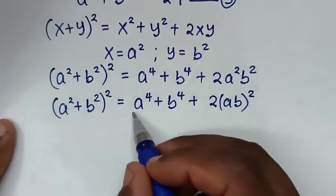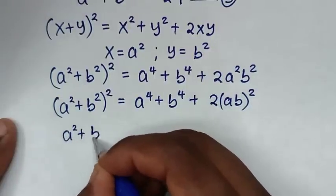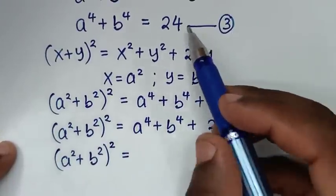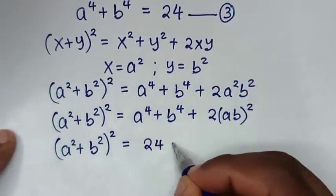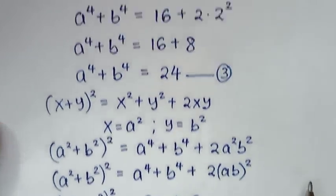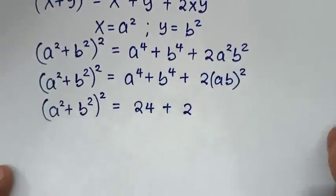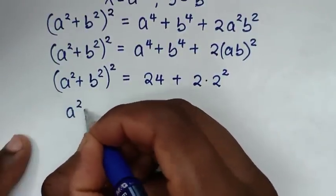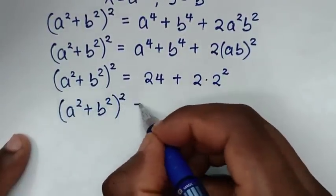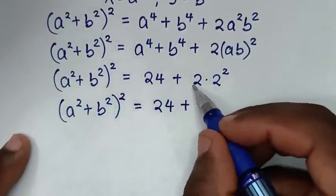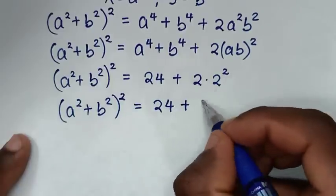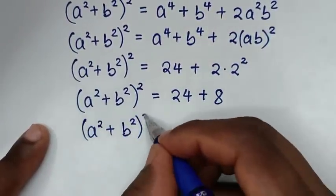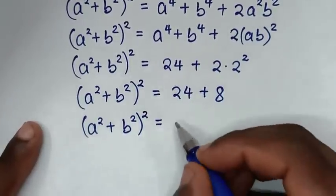We substitute the known values: (a² + b²)² equals a⁴ + b⁴, which from equation 3 is 24, plus 2(ab)², and ab from equation 2 is 2. So (a² + b²)² equals 24 plus 2 times 4, which is 24 plus 8 equals 32.